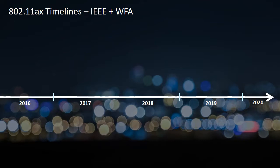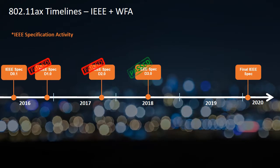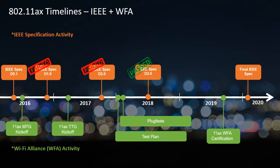Let's take a brief look at the IEEE, Wi-Fi Alliance, and commercial activities. Here we see the 11ax timelines for the IEEE specification activity, the Wi-Fi Alliance activity, and some of the commercial activity. The Wi-Fi Alliance certification is expected in mid to late 2019, and 802.11ax is due to be publicly ratified and released sometime in late 2019 or early 2020. In October 2018, the Wi-Fi Alliance introduced a new consumer-friendly naming convention: 11ax is now referred to as Wi-Fi 6, and 11ac is now referred to as Wi-Fi 5.